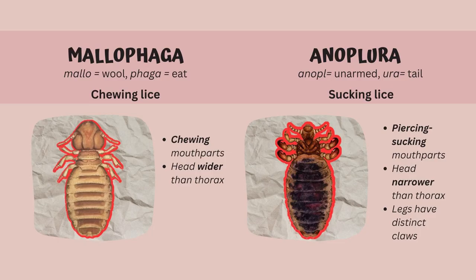Lice that infest livestock are categorized as biting or sucking based on their mouthparts. The mouthparts of biting lice are designed to bite or scrape the skin, or sever small pieces of hair or feathers to ingest. On the other hand, sucking lice have piercing and sucking mouthparts that pierce the skin, penetrate a blood vessel, and then suck blood through a straw-like channel.